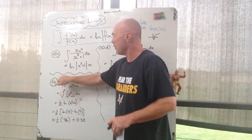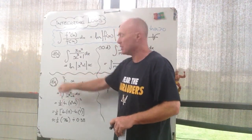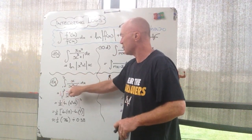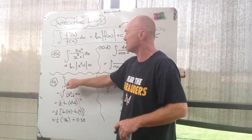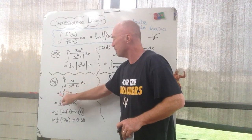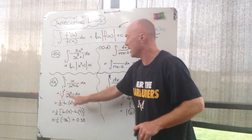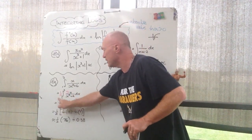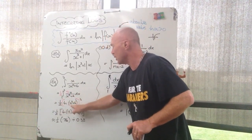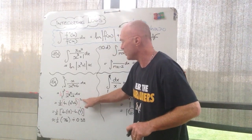Number two, the integral from one to three. So we've got some boundaries here of x over x squared plus six. Well, look, the derivative of that is two x, not x. So I've got to put a two in front. Compensate out there with a half. So now it's function dash x on function x. So the integral is half log x squared plus six, one to three.